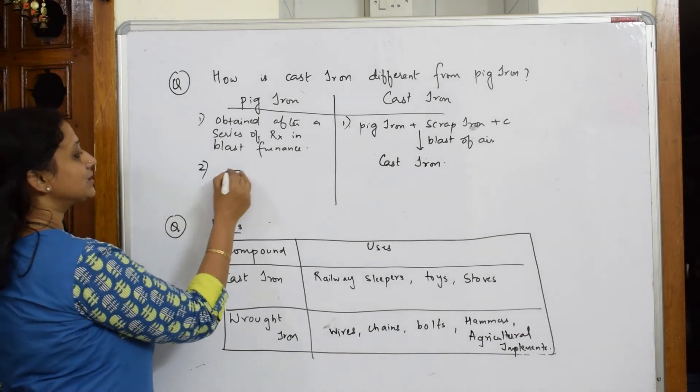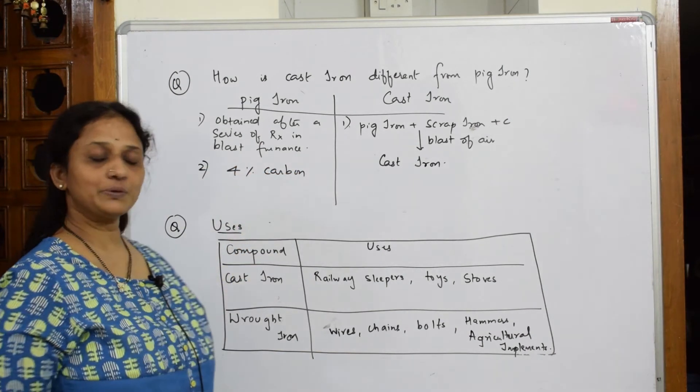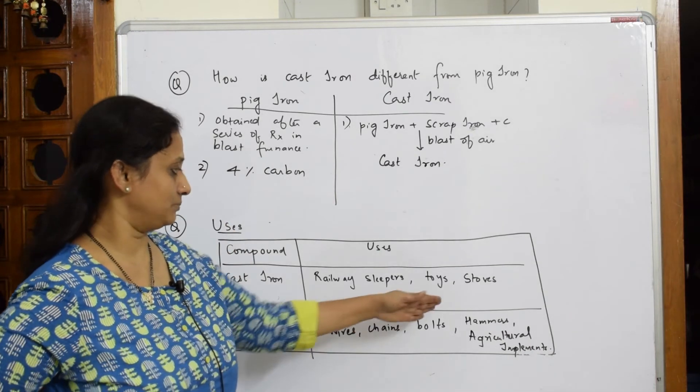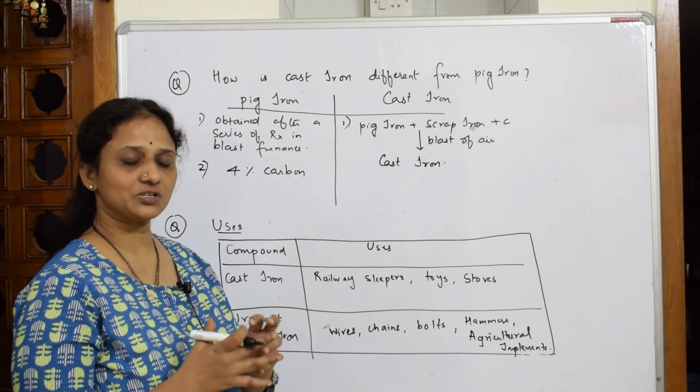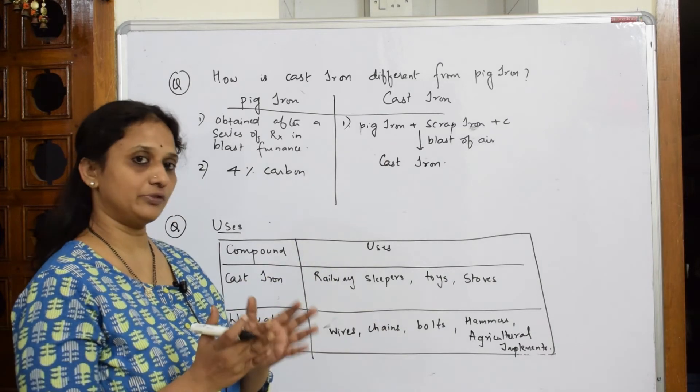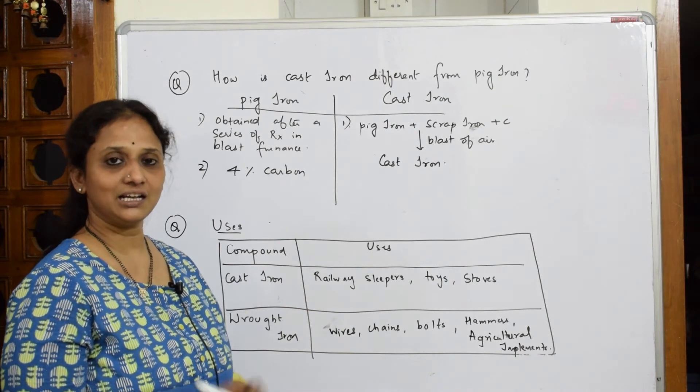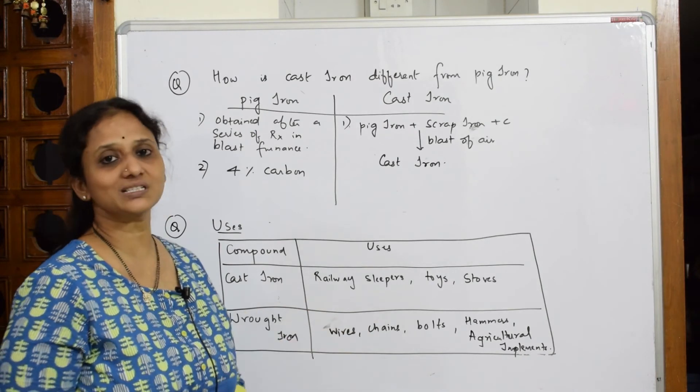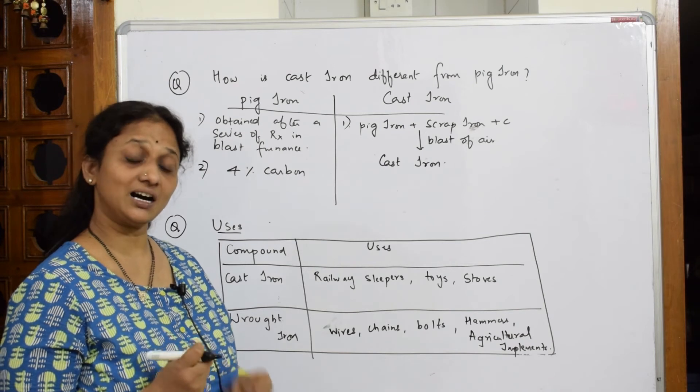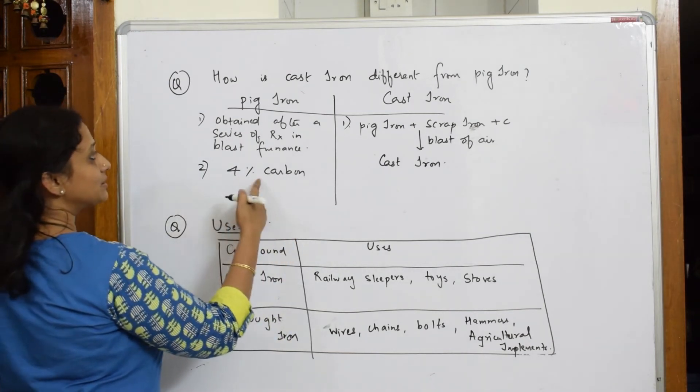Pig iron contains 4% carbon. Because of this 4% carbon, I can easily mold it into toys or whichever shape. It's not so hard as cast iron. Cast iron is very hard. If you want to make agriculture implements or very hard things like hammers, we use cast iron because it's very hard and brittle. This is because of the percentage.